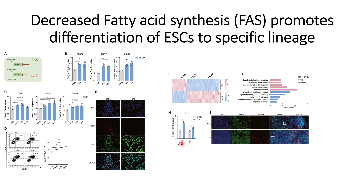When C75-treated cells were differentiated towards a pancreatic lineage, there was an increase in the number of pancreatic beta cells. Markers for pancreatic beta cells such as insulin and glucagon showed a clear increase in C75-treated cells compared to controls where no inhibitors were used, and those cells were also subjected to differentiation towards a pancreatic cell lineage. This clearly indicates that inhibition of fatty acid synthesis accelerates differentiation of embryonic stem cells towards a specific lineage.